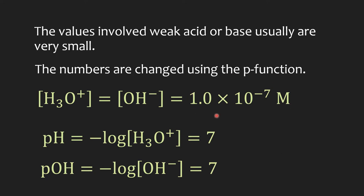We change this value into the P function. We get pH equal to negative log of hydronium ion concentration. If hydronium ion concentration is 1.0 times 10 to the minus seven, the pH would be seven. Similarly, if we know hydroxide ion concentration, we can get pOH, which is negative log of hydroxide ion concentration. If the value is 1 times 10 to the minus seven molar, pOH is also seven.